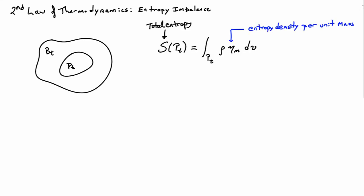The total entropy of the part will denote by S, and that's going to be an integral of the entropy density. We'll use the symbol ηm for the entropy density per unit mass. If I multiply that by the actual mass density ρ, then I'll get entropy per unit volume. Multiply it by little volumes and add up by integration, I'll get the total entropy of this section of the body.